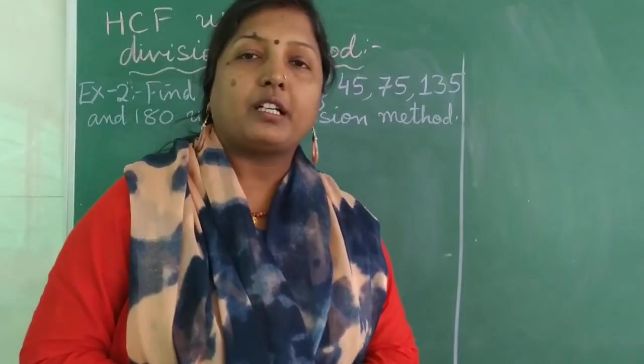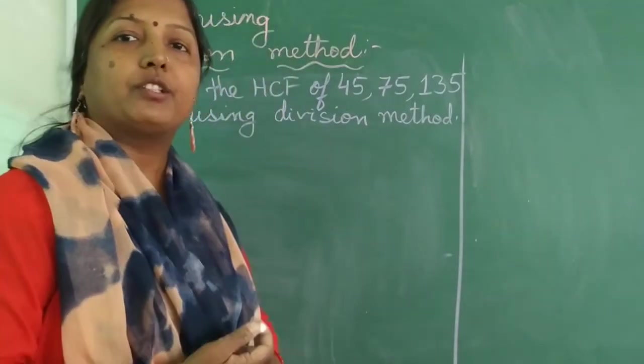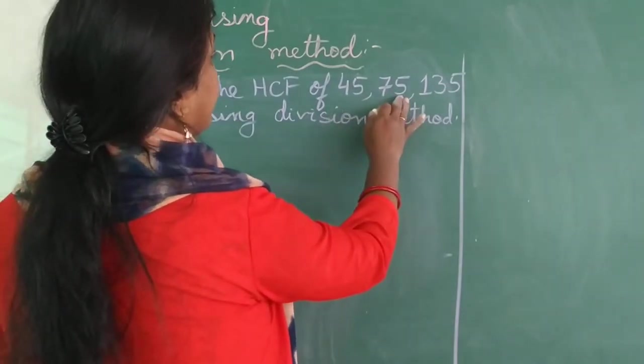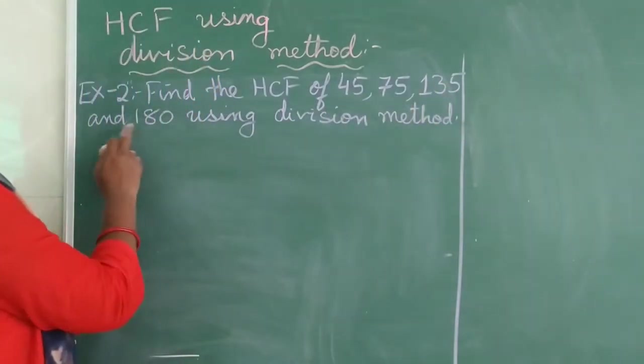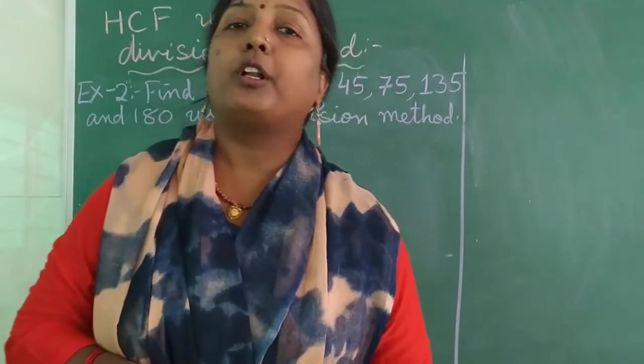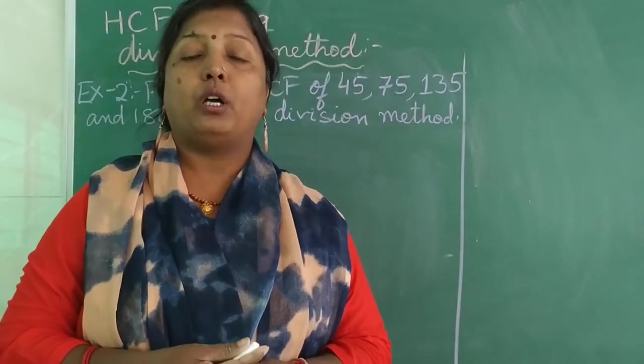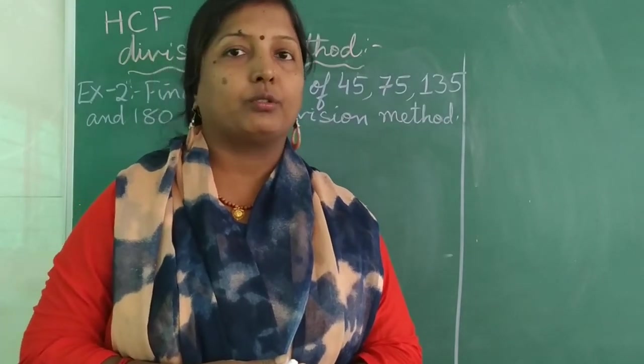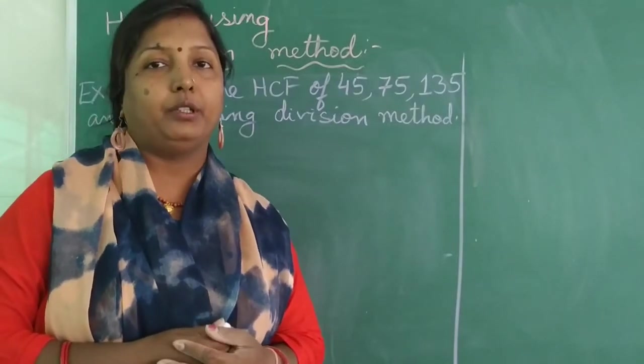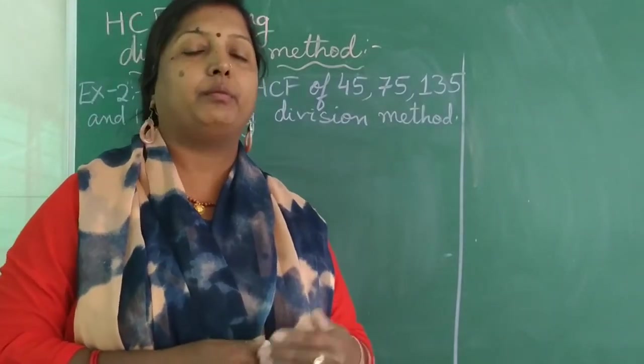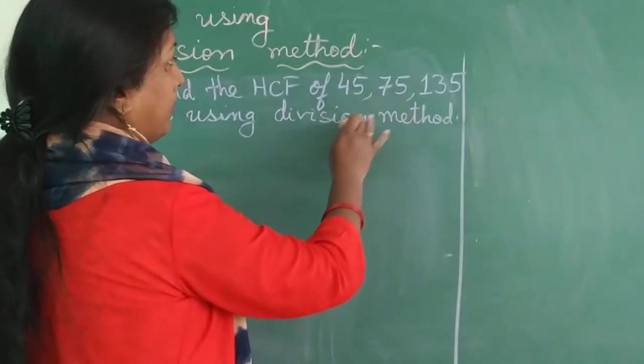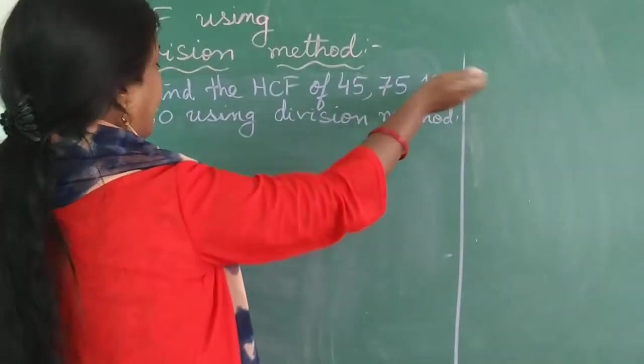So let us understand using one more example. The next example is on the board. You can just see here. Let us find the HCF of 45, 75, 135 and 180 using division method. So children, this time I took four numbers together so that you know how to do with four numbers also. Well, as I said, what are we going to take? We can take any two numbers and the smaller we will make it as the divisor and the bigger as the dividend. So this time I will ask you to take the consecutive numbers and take any other numbers. Say 45 and 135.